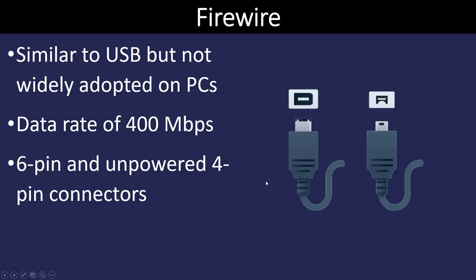Firewire is very similar to USB. It was never widely adopted and is designed primarily for video transfer. It has a data rate originally of 400 megabytes, but now there are Firewire 800 and Firewire 1600, which give much faster data transfer speeds. They also come in different power ratings and different types of ports.